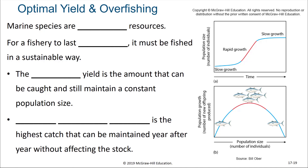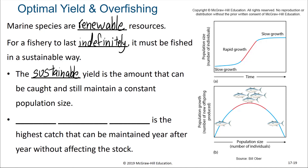Marine species are renewable resources. But in order for a fishery to last indefinitely, it must be fished in a sustainable way. The sustainable yield is the amount that can be caught from a population and yet still maintain a constant population size. At first guess you might assume that any sort of collecting from a population would result in that population size going down.